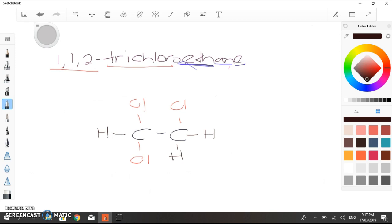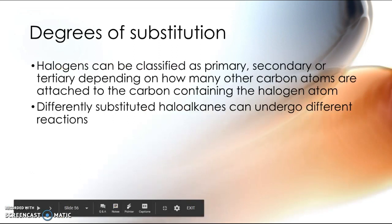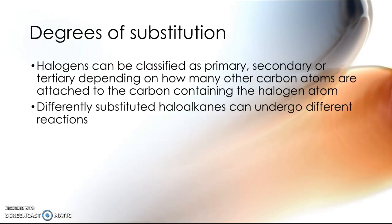Now when we talk about haloalkanes and alcohols, we also need to consider the degree of substitution of that alcohol or haloalkane. We describe that as being primary, secondary, or tertiary substituted, depending on how many carbons are attached to the carbon atom that contains the halogen. I know that sounds quite confusing - it will look much more sensible when I show you. But the important thing to note is that differently substituted haloalkanes and alcohols will undergo different reactions.